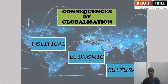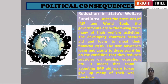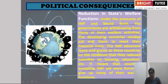Now, what are the consequences of globalization? Political, economic and cultural consequences. Politically, globalization means the welfare state is now giving way to a more minimal state, and state capacity has received some constraint. There is a reduction in state welfare functions. Under the pressure of the IMF and World Bank, governments are withdrawing from many of their welfare activities. Developing countries needed aid and loans to meet their financial crisis, and the IMF advanced loans on the condition that they reduced subsidies on housing, education, etc., forcing countries to give up many of their welfare functions.